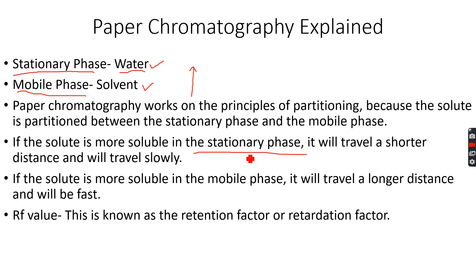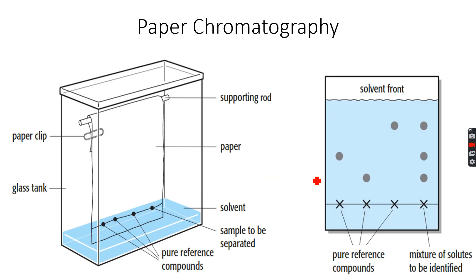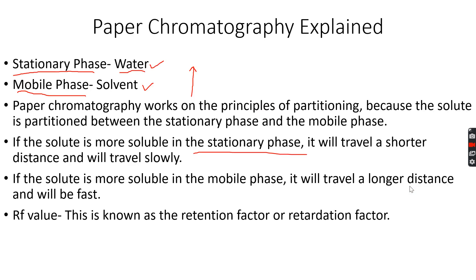If the solute is more soluble in the stationary phase, it will travel a shorter distance and travel slowly. As you can see in the example we did — this was A, this was B, and this was C — A traveled the shortest distance. This means that out of all three components, A was the most soluble in the stationary phase and the least soluble in the mobile phase.